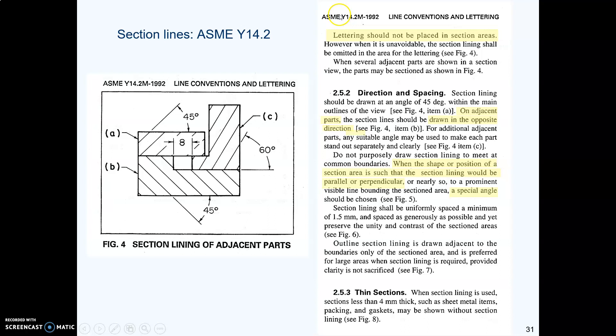And to illustrate that, here is the source document. So here is the ASME Y14.2 standard that includes stuff about hatching section lines. And I've highlighted the points that we just talked about. So they say lettering should not be put in the sectioned areas. Although they say, all right, if you have to, you can do something, make a hole in there like they did here. Here they say on adjacent parts, draw the hatching in different directions. And here they say, if the shape of the part is parallel or perpendicular to the hatch lines, then choose a special angle. In other words, rotate your hatch pattern a little bit.